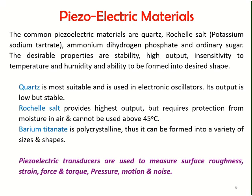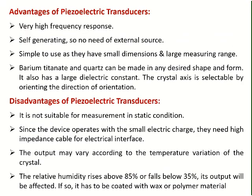Piezoelectric transducers are highly useful for measuring surface roughness, strain, force, torque, pressure, motion, and noise. Advantages include very high frequency response, self-generating — requiring no external electrical source — simple to use with small dimensions and a large measuring range. Barium titanate and quartz can be made in any desired shape and form, have a large dielectric constant, and the crystal axis is selectable by orienting the direction of orientation.